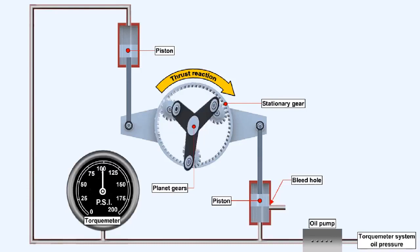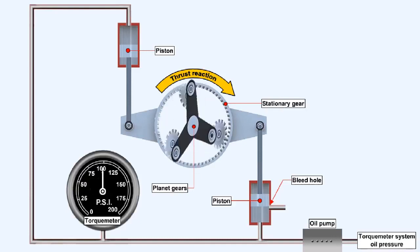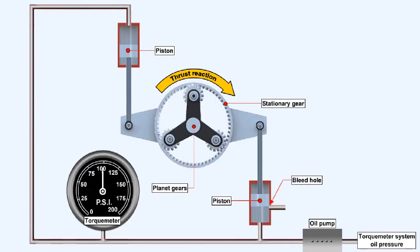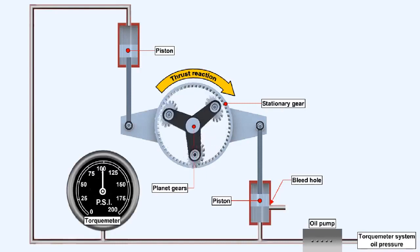One of the pistons in the system partially covers a bleed hole, which, if it's uncovered, will allow oil pressure to be dumped to the engine oil return. While the engine is running, the piston in the cylinder with the bleed orifice will take up a sensitive position where the oil pressure generated by the torque meter pump just balances the thrust being generated on the stationary gear.